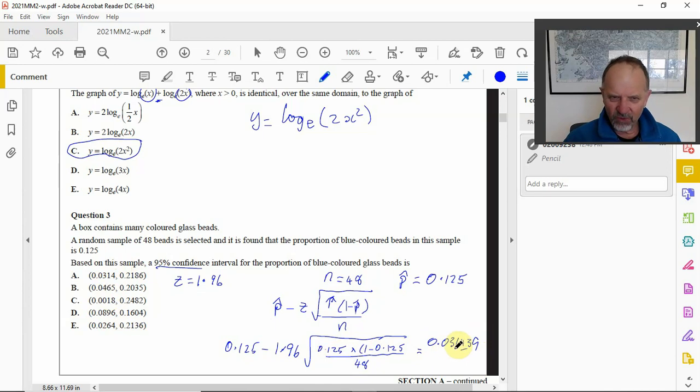0.0314, and when you look at these alternatives there's only one, A, which has that. So I don't need to in this case go ahead and work out the top end of our confidence interval. If there were two alternatives that had that 0.0314, then I would go and work out the other end, which of course is very similar, just a plus here.